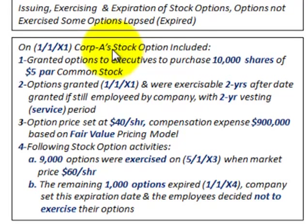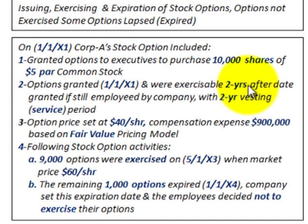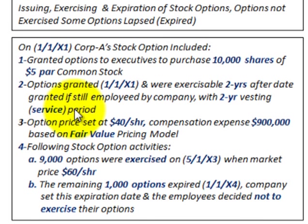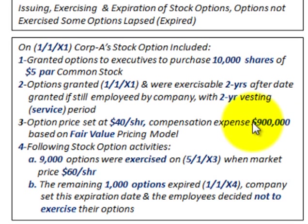For example, on 1/1/X1, Corporation A's stock options: they granted options to executives to purchase 10,000 shares of $5 par common stock. The options were granted in 1/1/X1 and were exercisable two years after the grant date, if the executive was still employed. There's a two-year vesting or service period required. The option price was set at $40 per share, and compensation expense was estimated to be $900,000 on these options, based on a fair value pricing model.